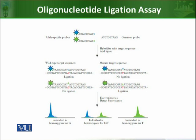The idea is: if the wild type probe perfectly binds at its sequence and the common probe binds right next to it, then in the next step we add ligase, which will attach both the wild type target probe and the common probe together.